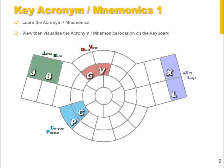Personal Computer, GV — Great Value, XL — Extra Large. Just visualize the locations on the keyboard.